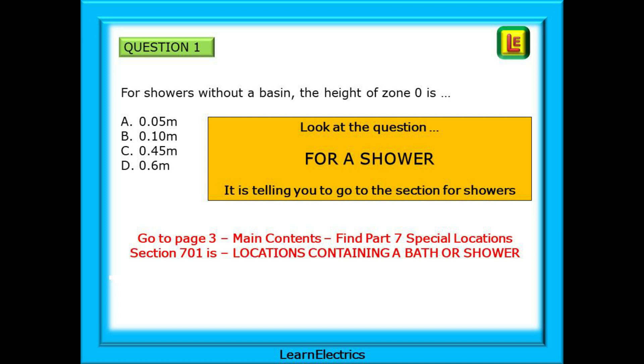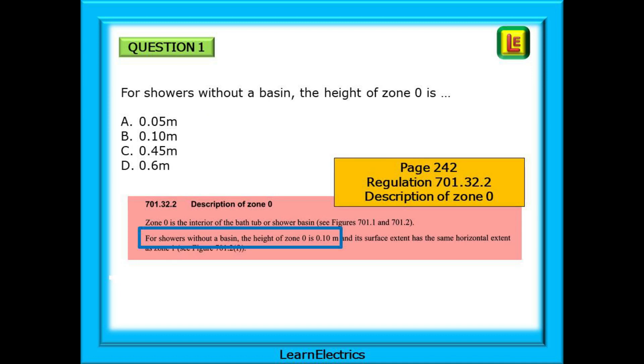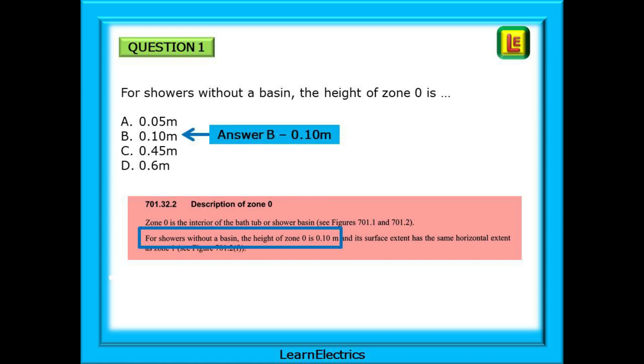Look at the help that the question is giving you. It says 'for a shower.' It is telling you to go to the section for showers. Go to page 3, the main contents page, and find part 7, special locations. Section 701 is called Locations containing a bath or shower. This is where you will find the answer. So go there now. On page 242 is regulation 701.32.2 called Description of zone 0, shown in the pink box below, and there is our answer. Choose answer B, 0.10 metres. So easy. Just follow the clues from the question.